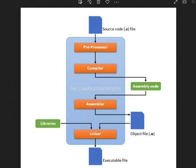Let's look at the compilation process in C. In C programming, there will always be a source code which we know as the high-level language. Your source code is always saved with the .c extension, so the .c file is what we call the source code. Before it gets to the compilation process, it is first passed to a preprocessor.